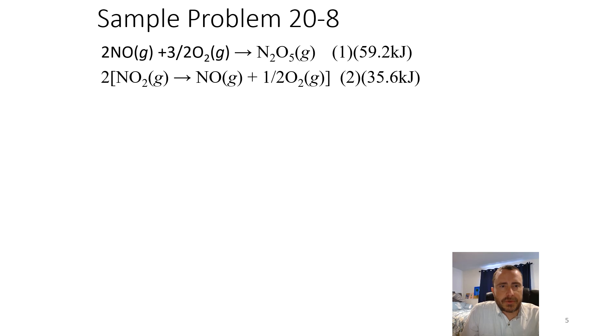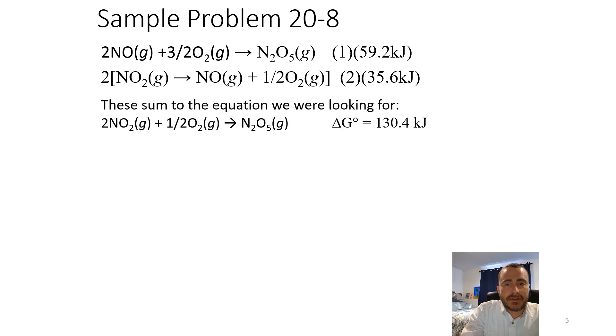So finishing up our sample problem 20-8, we had the fact that the top reaction is 59.2 kilojoules, so it's going to be positive. The bottom reaction is now our 71.2 kilojoules, two times a positive 35.6 kilojoules, and so we end up with the sum of those equations which is exactly what we were looking for. Our delta G - we add those together, unlike our K's, we're going to add them together, so our 71.2 and our 59.2 gives us an overall delta G of a positive 130.4. It's positive value, so that is a non-spontaneous reaction.